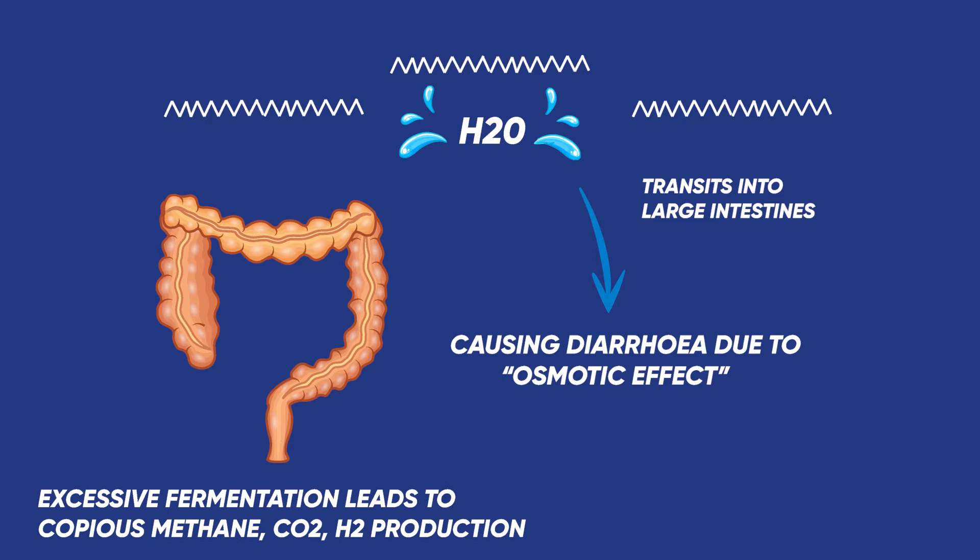The microflora of the large intestines also goes into hyperdrive, leading to excessive fermentation of the sugars, producing copious amounts of gases such as methane, hydrogen and carbon dioxide, which leads to abdominal cramping and flatulence.